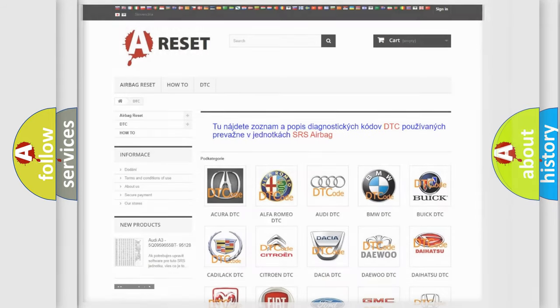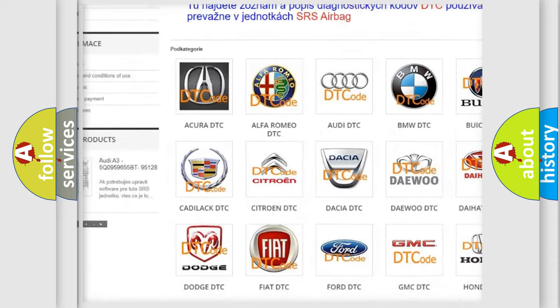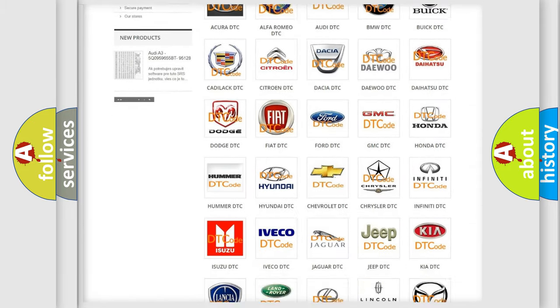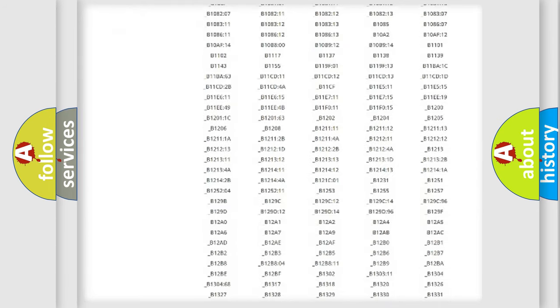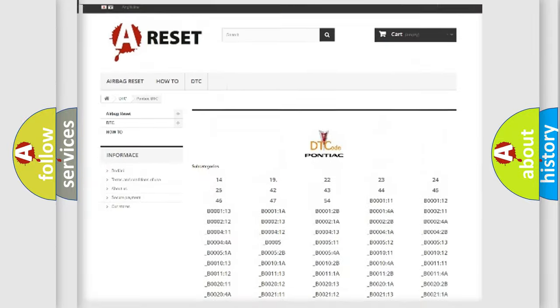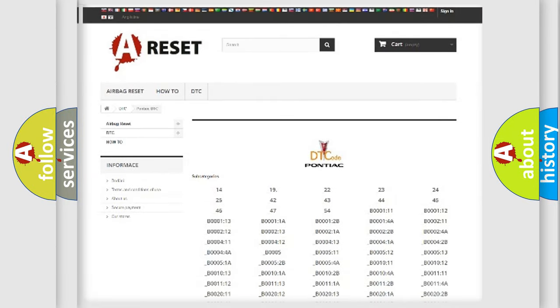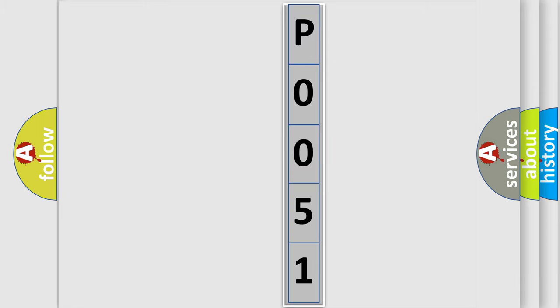Our website airbagreset.sk produces useful videos for you. You do not have to go through the OBD2 protocol anymore to know how to troubleshoot any car breakdown. You will find all the diagnostic codes that can be diagnosed in Pontiac vehicles, and also many other useful things. The following demonstration will help you look into the world of software for car control units.